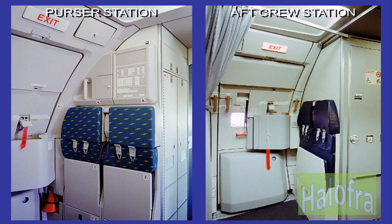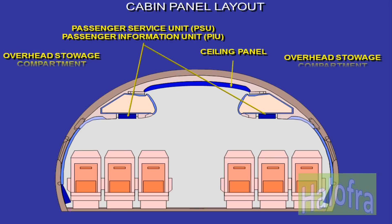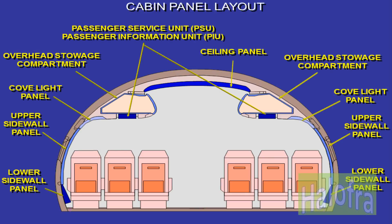Each main cabin crew station is equipped with a communication system, including a handset and an attendant panel, emergency equipment stowage. The cabin interior is equipped with removable panels.